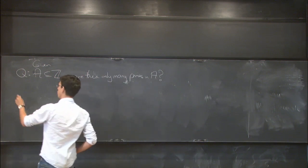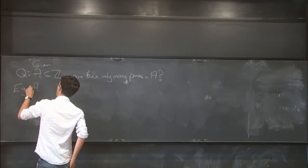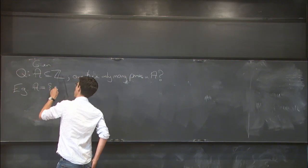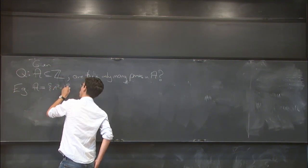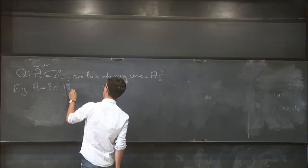For example, you could take a to be the set of values of some polynomial, say the polynomial n squared plus 1, and then this would be asking are there infinitely many primes of the form n squared plus 1.